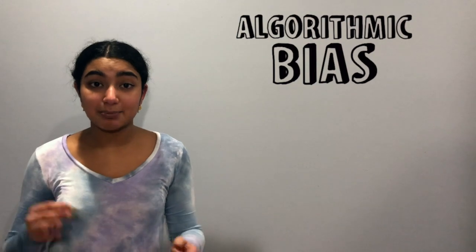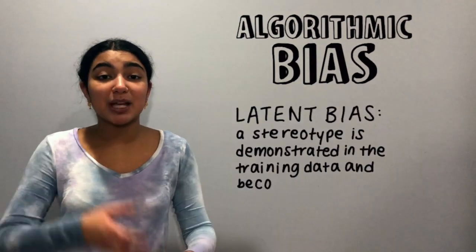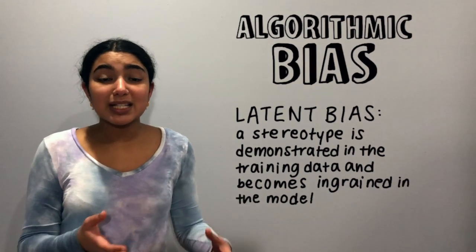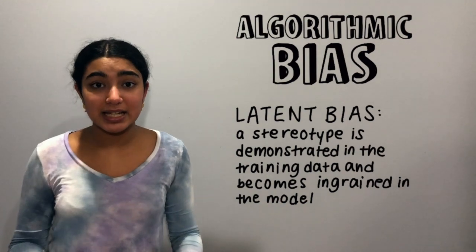The example I gave earlier with the books is similar to one of the many types of bias called latent bias, when a stereotype that exists in society is demonstrated in the data and becomes ingrained in the model. Being small and lightweight doesn't make something a book, but this is what was amplified by the model because that's what it saw in the data.